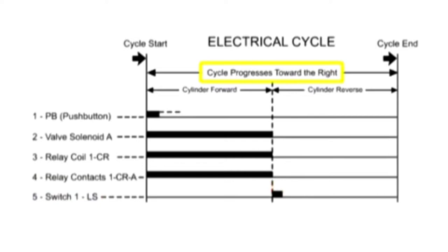It should be noted that this width may not necessarily correlate to a specific time such as one second or one minute. Rather, the purpose of the horizontal line is to show each component's state in relation to the other components.